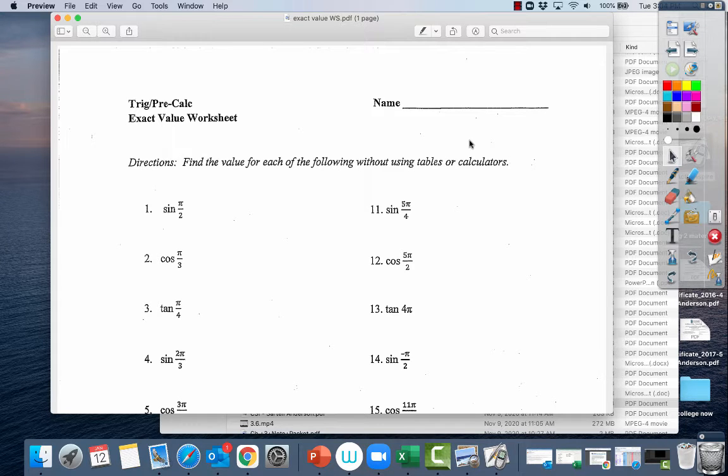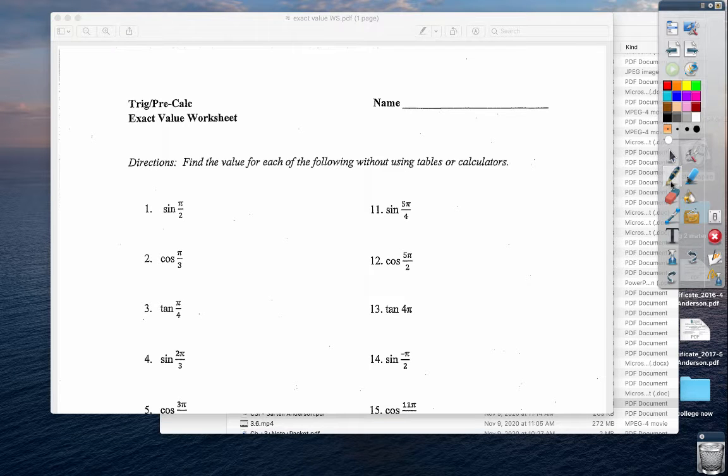Okay, we're going to do the exact value worksheet. I just want to do a couple with you and think about how you would approach some things. Some tools that you need to have at your disposal when you do these types of things are things like the ASTC, that is where things are positive.